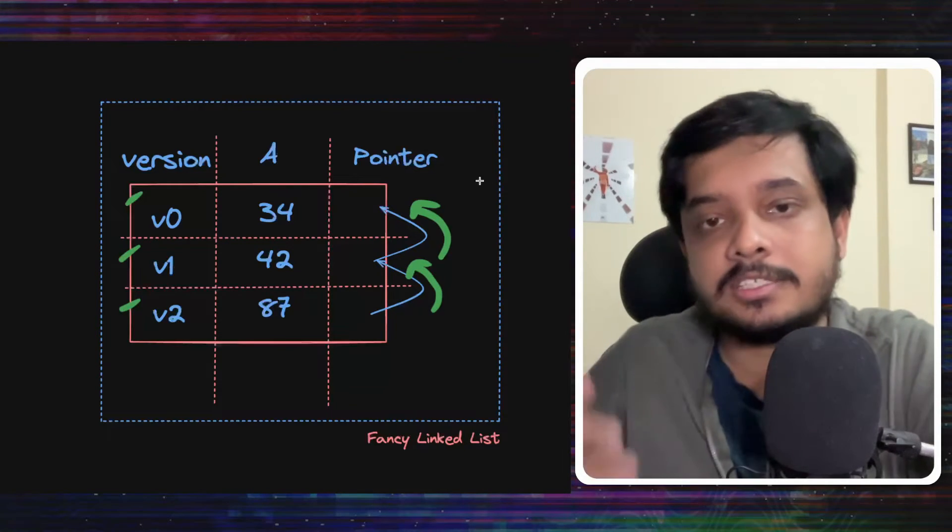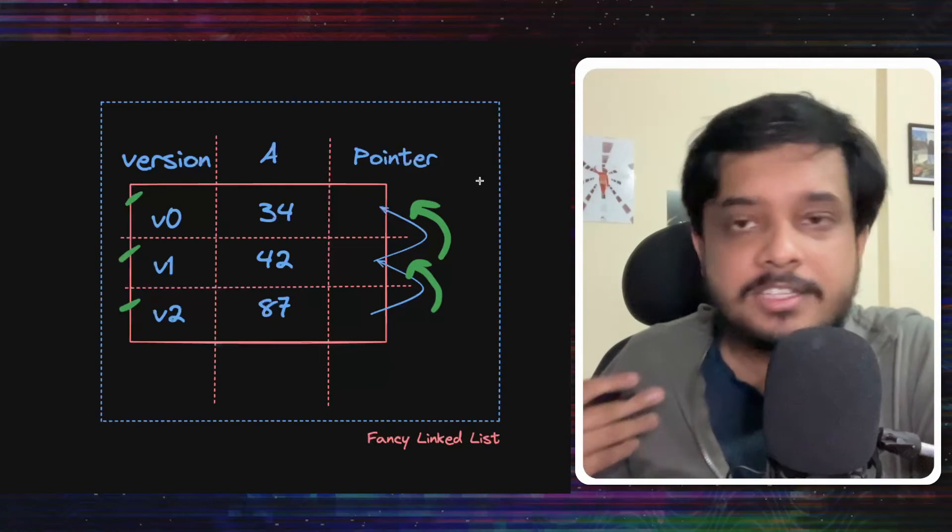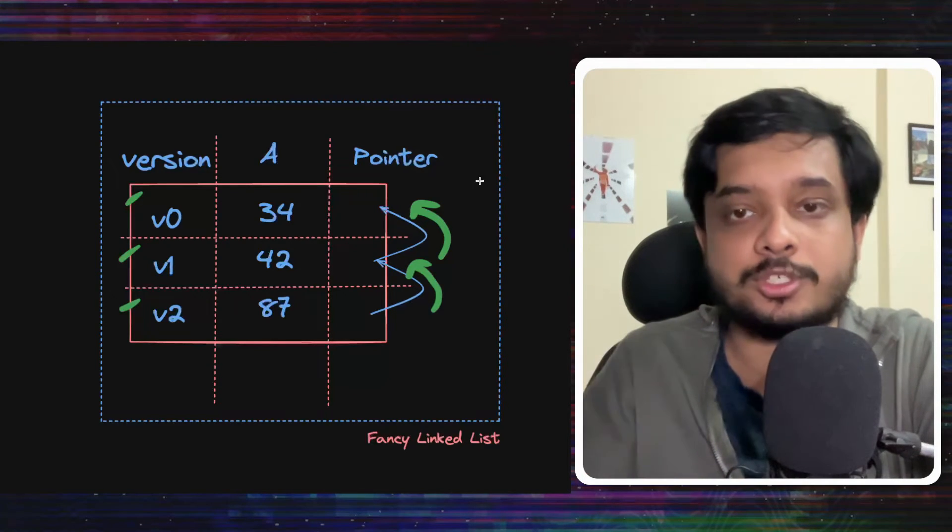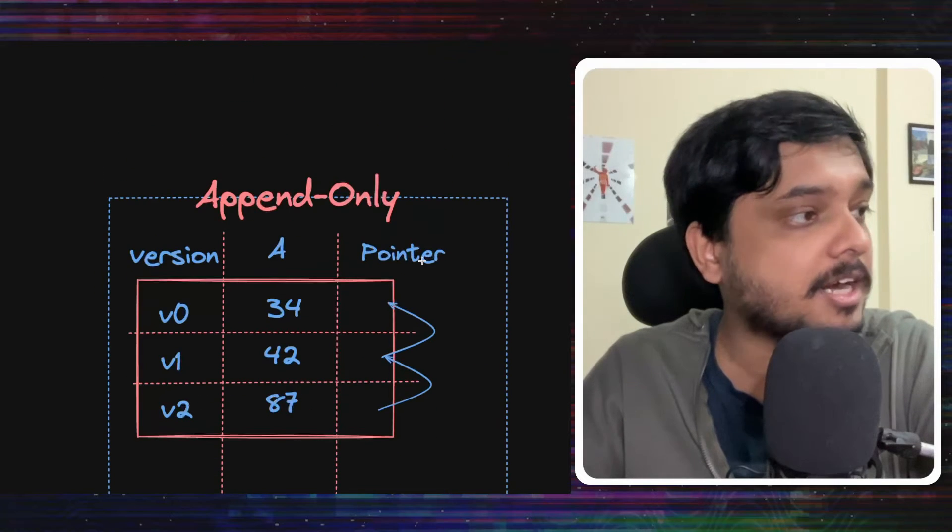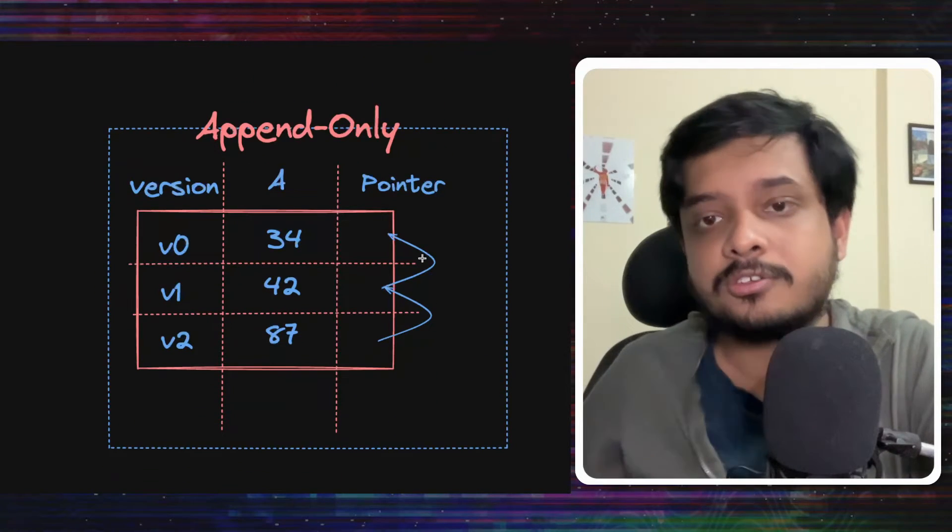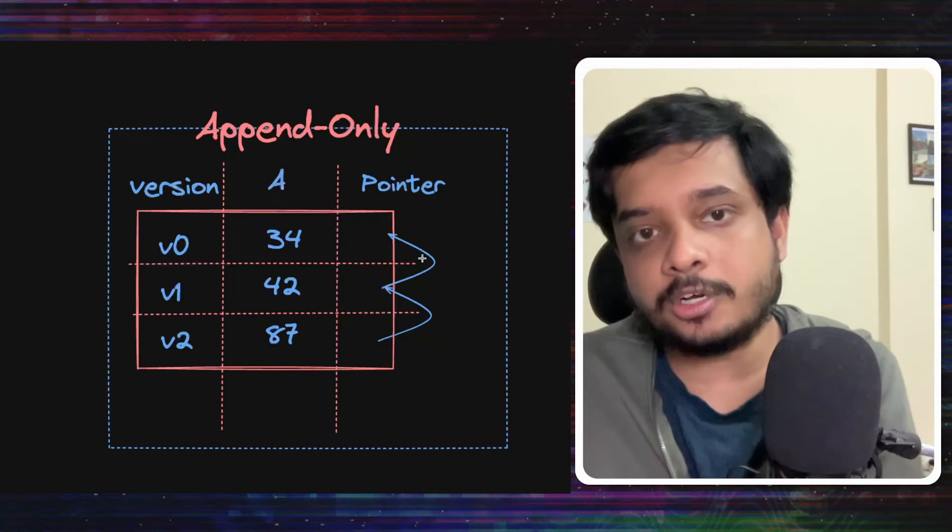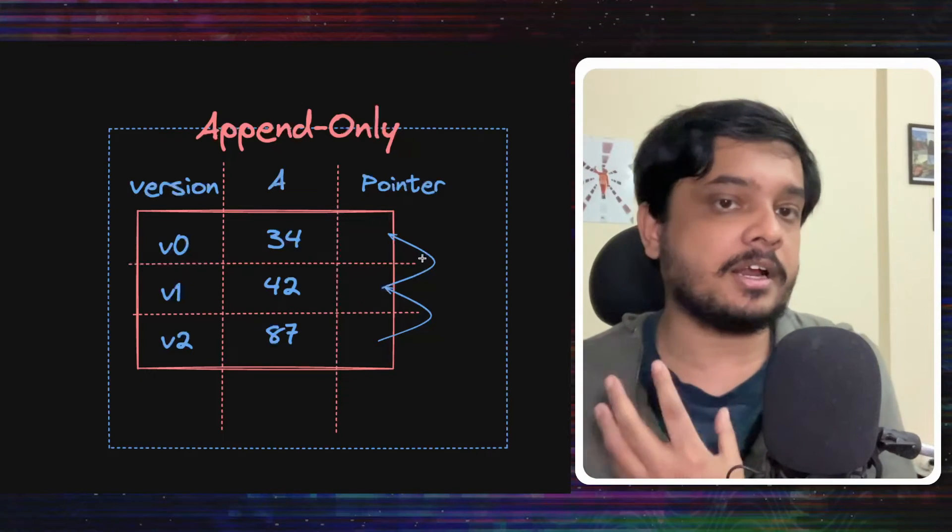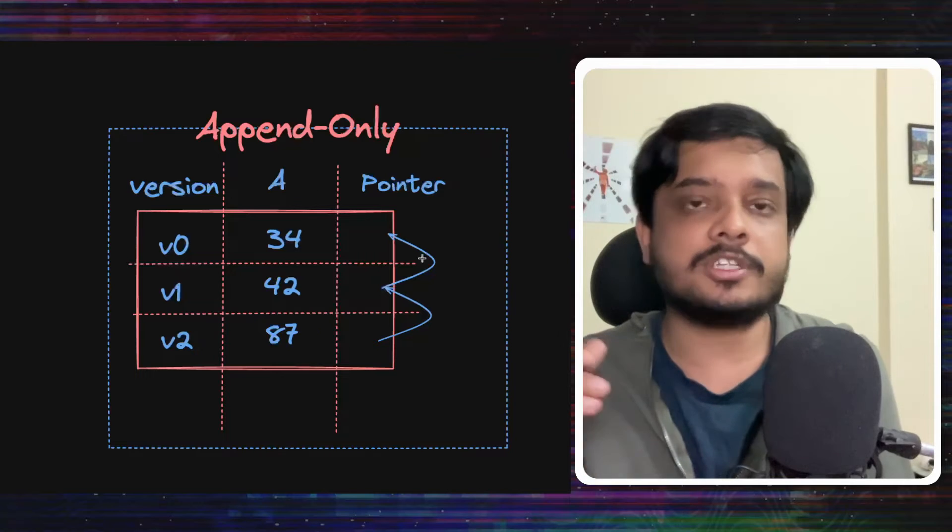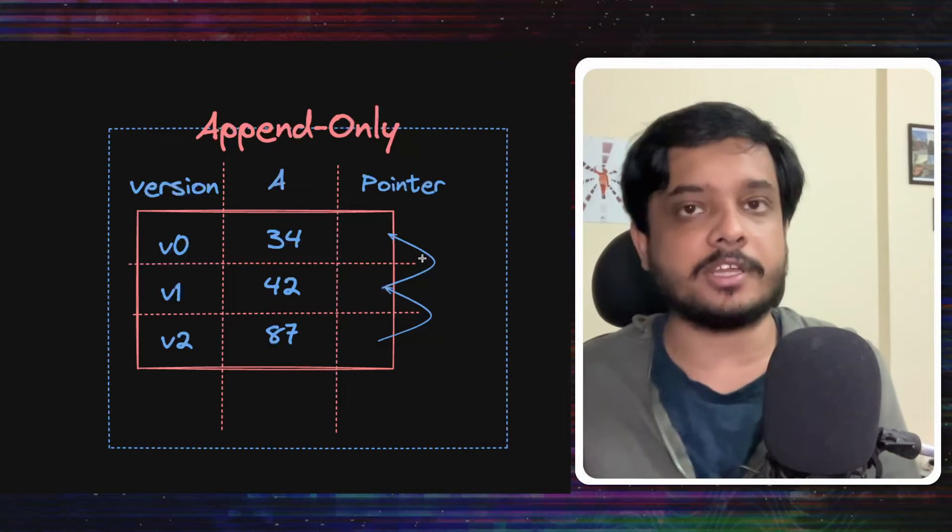All the data from all the versions is stored in the same table. The version information is recorded and each version points to the previous version. It's like a linked list. This model is called the append-only storage model. I mean, you are just appending data to a table, so the name makes sense. All this older version data would actually not be visible to the users because when they run a read query, let's say select star, it would just read from the latest version of the data.